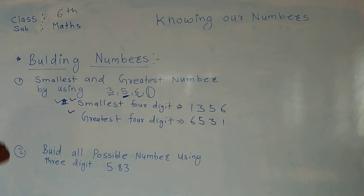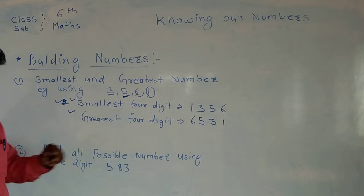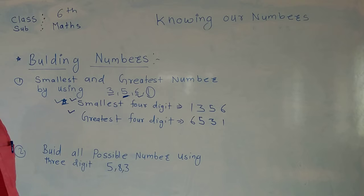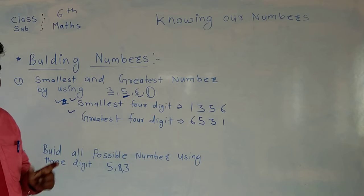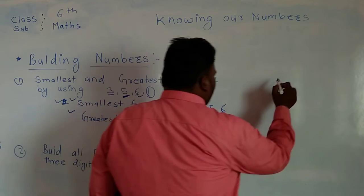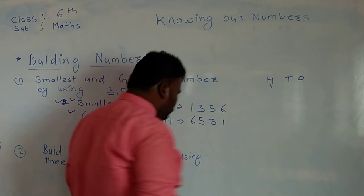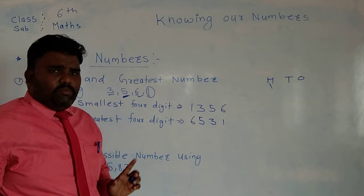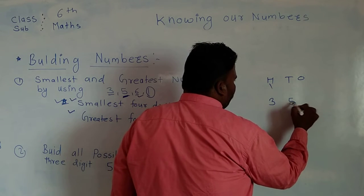Now we should understand how to build all possible numbers using three digits. For example, you have three numbers: five, eight, three. How do we use these numbers to build all possible numbers? Each digit is used only once per number — for example, at the hundreds place use five only one time, and eight at the tens place. Let's talk about it. First I write the numbers: three, five, eight.